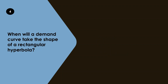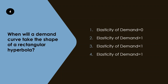Question 4: When will a demand curve take the shape of a rectangular hyperbola? Rectangular hyperbola means that the area of any rectangle drawn below that curve is the same — that is its mathematical property. The options are: elasticity of demand equals 0, greater than 1, less than 1, or equal to 1.